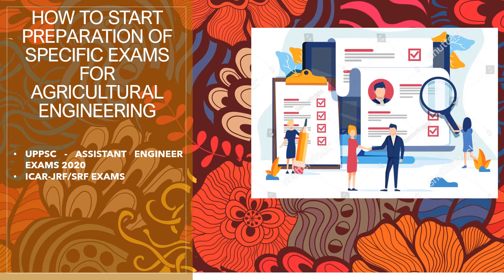Now I want to tell you how to start preparation for the UPSC exam for agriculture engineering. Aggies Smart Classes has targeted two exams — first, the UPSC Assistant Engineer exam in 2020, scheduled on 1st November 2020. The exam format has changed to two objective type papers, with 25 questions from Hindi subject in the first paper.